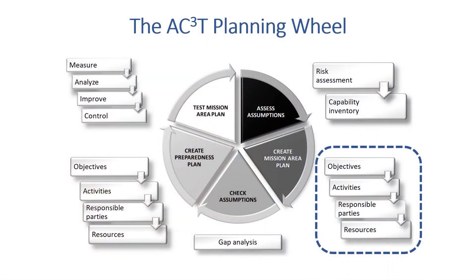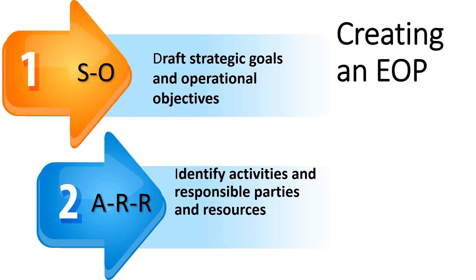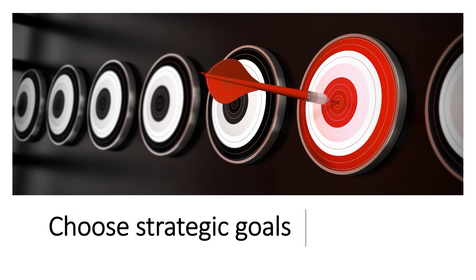Our planning methodology is represented by the ACT planning wheel. We can create an EOP in basically two steps. Number one: SO — we draft those strategic goals and the operational objectives. Number two: ARR — identify the activities and responsible parties and assign those resources. The choice of mission area determines which capabilities are used in the project plan. In this case, we're writing a response plan — in other words, an Emergency Operations Plan, or EOP.